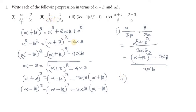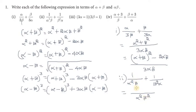Second problem: 1 by alpha square beta plus 1 by beta square alpha. The highest power we have is alpha square and beta square. So we multiply: alpha square plus beta square divided by alpha squared beta squared, which is alpha beta whole square. So the answer is expressed in terms of alpha plus beta whole square minus 2 alpha beta, divided by alpha beta whole square.